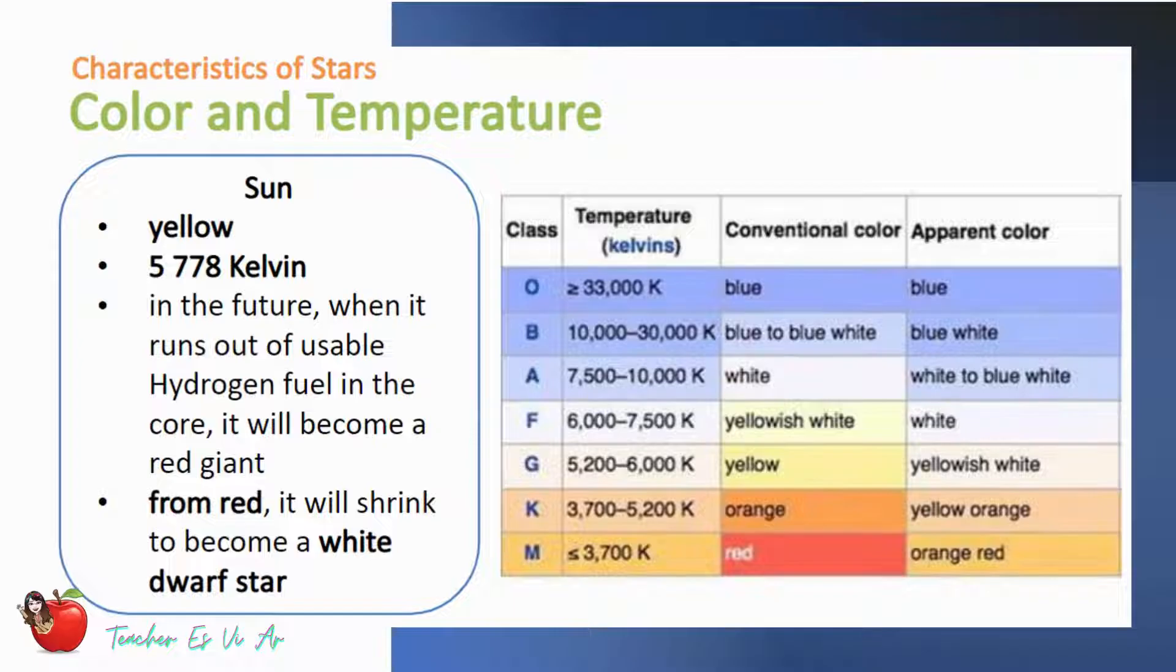The sun is a yellow star. Its surface temperature is 5,778 kelvin. In the future, when it runs out of usable hydrogen fuel in the core, it will become a red giant. From red, it will shrink to become a white dwarf star.